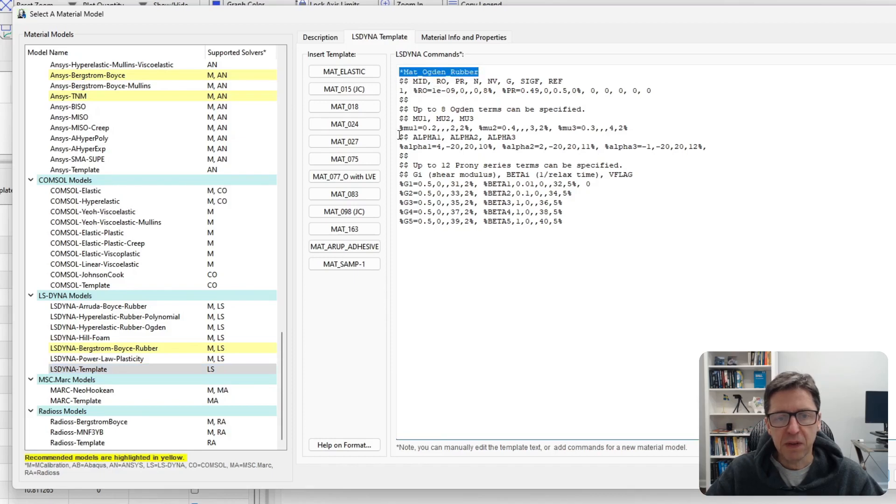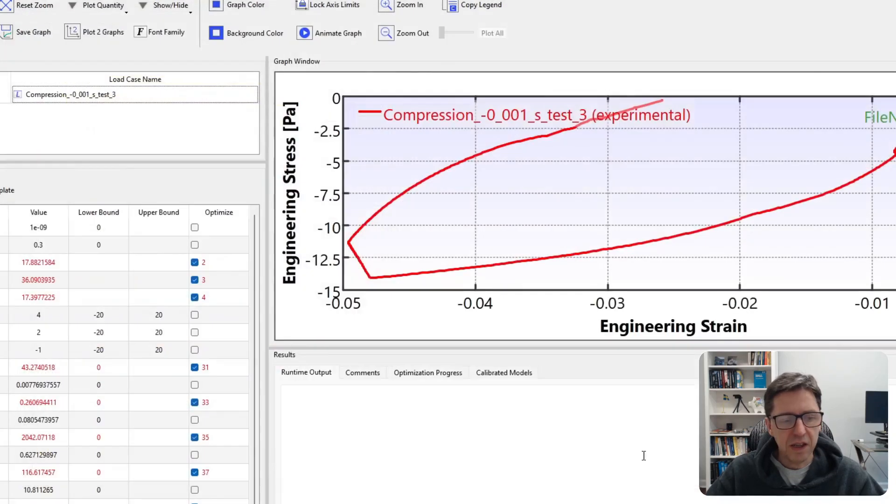We have mat Ogden rubber, and then we have the Ogden parameters. We have the alpha parameters in the Ogden model. And then we have the shear modulus values and the beta values in the way that's shown here. And then you can just calibrate this and run this as normal.